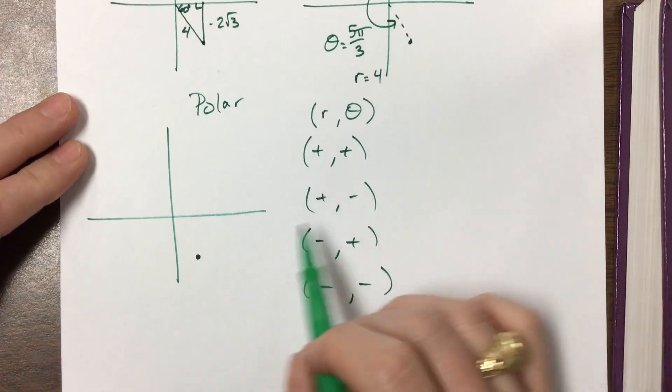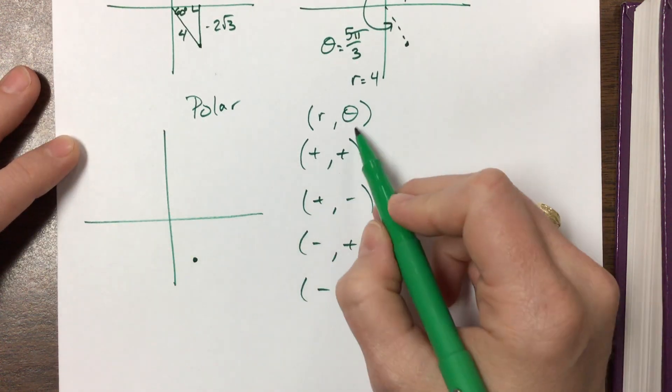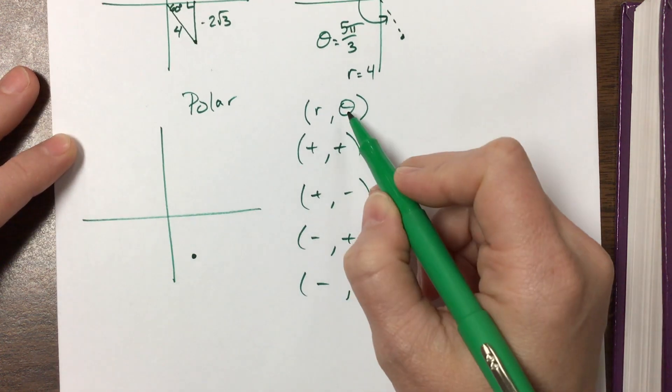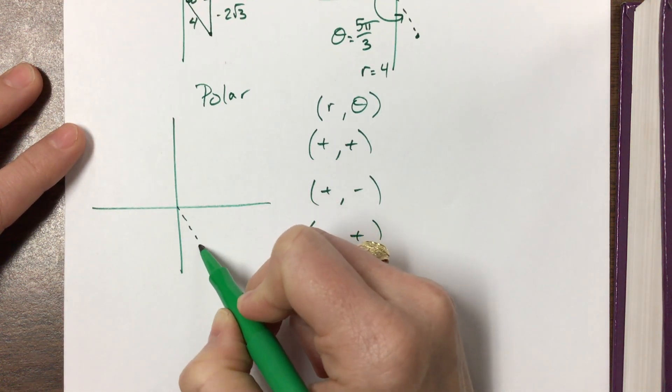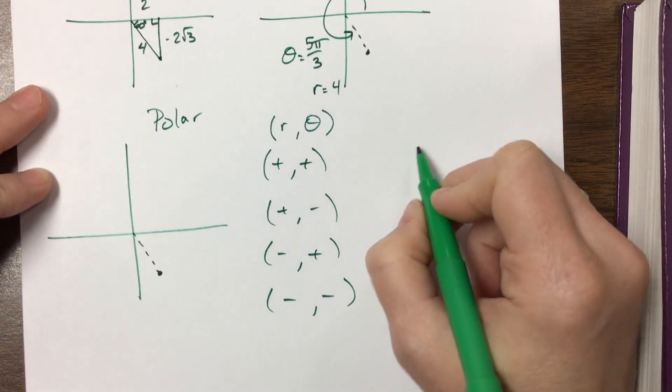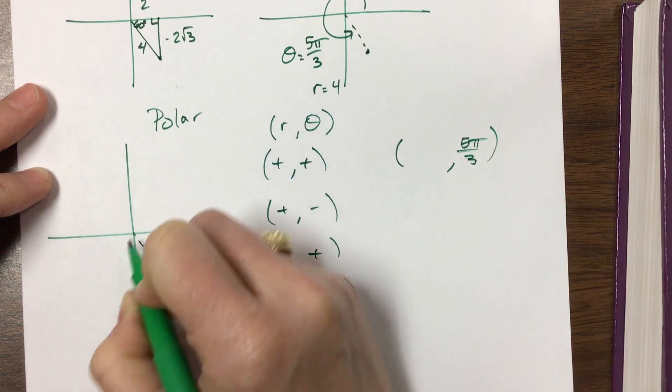So if I want a positive and a positive, I'm gonna think in terms of the angle first. So I'm gonna go in a positive angle to get to here. That was a positive 5 pi over 3, and then I had a radius of 4. So that's a positive 4.